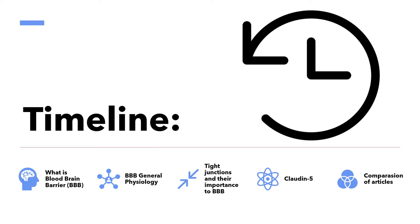To start, we will begin to talk about what is the blood-brain barrier and its physiology in a general form. Then we'll focus on the tight junctions and their importance for the BBB, and within the proteins related with the tight junctions we choose to focus on the claudins — most precisely claudin-5, which showed to be more impacting for the physiology of the BBB. Finally, we will discuss some articles related with this theme.